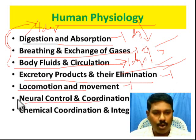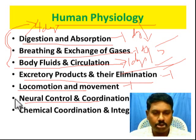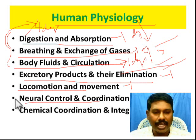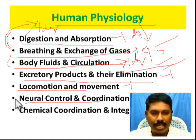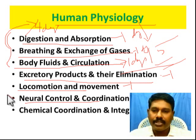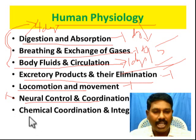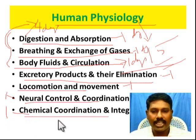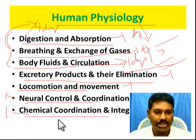And then excretion, locomotion and movement. Neural coordination and control - this is a period chapter covering neural control, eyes, nose, skin, and mouth. You will study chemical coordination and integration as well.